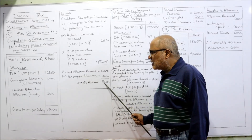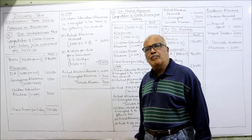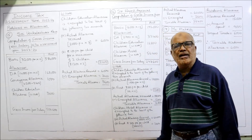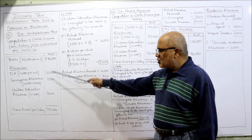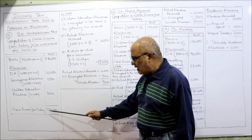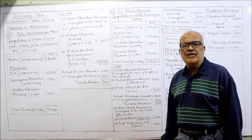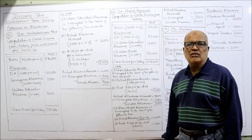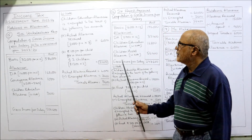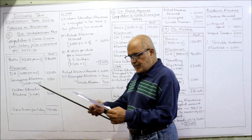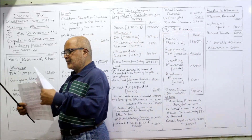This is the gross income from salary. Now, the 16th problem.